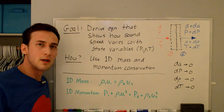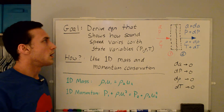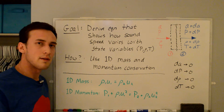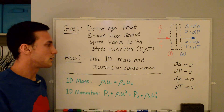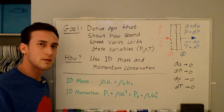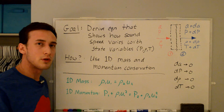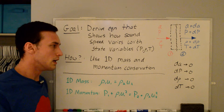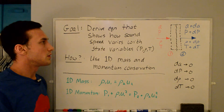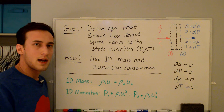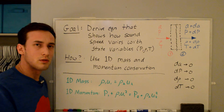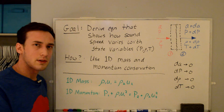Hey everyone, in this video I'm going to go through the derivation of the speed of sound. The overall goal is to derive the equation that shows how the sound speed varies with state variables such as pressure, density, and temperature. We're going to use the 1D mass conservation and 1D momentum conservation equations derived in previous videos. I'll be solving for the general equation for any gas, and then simplify down to the more familiar form for a perfect gas.